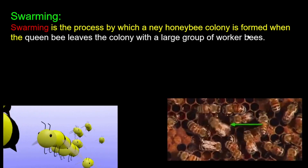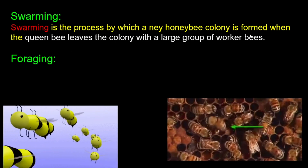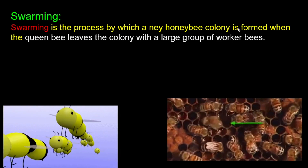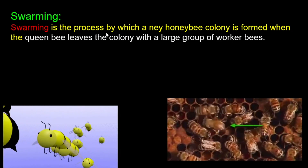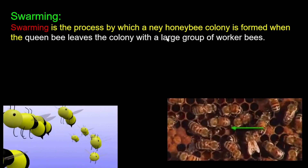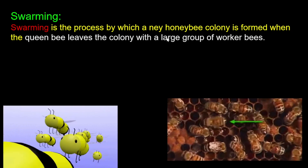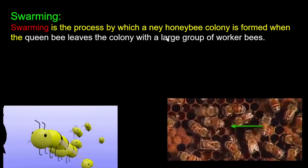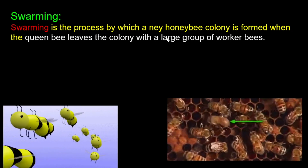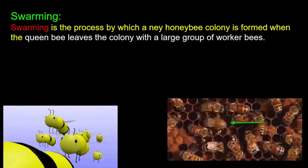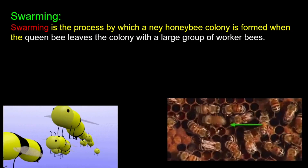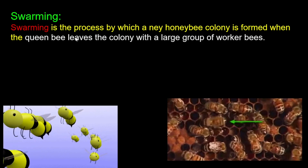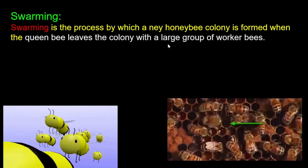Swarming creates a new colony. If the existing colony cannot be controlled or is threatened by a predator, the queen will make a new colony through swarming.